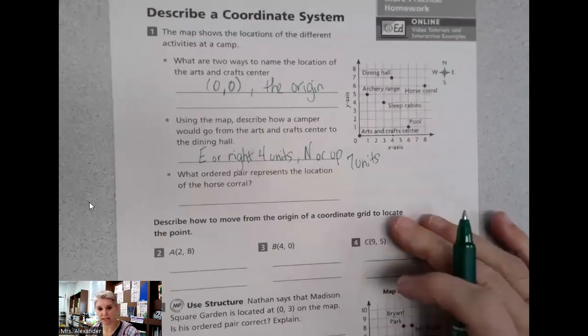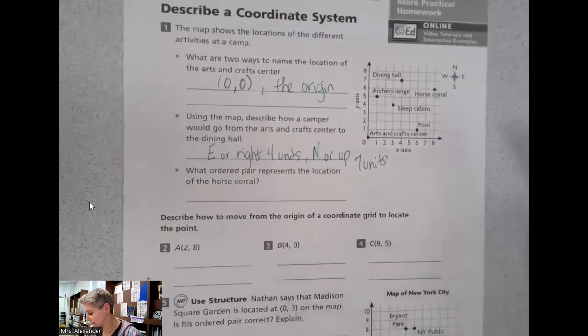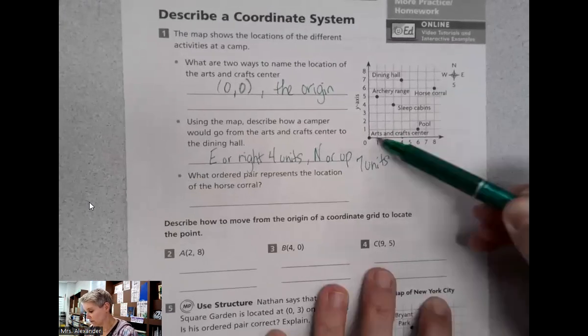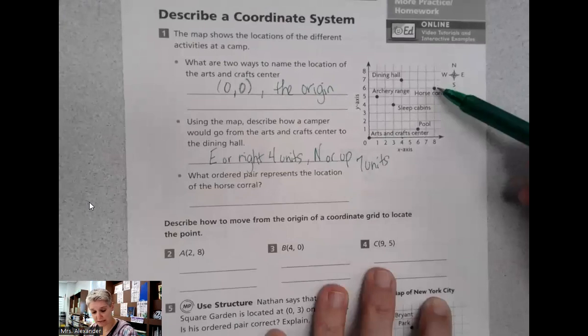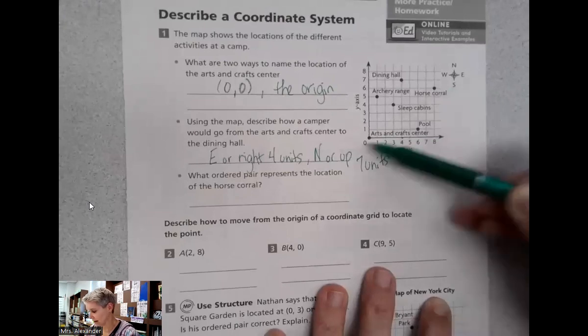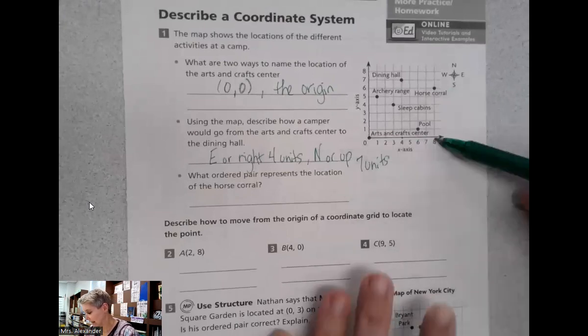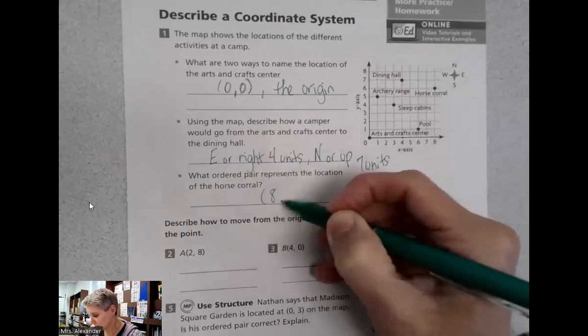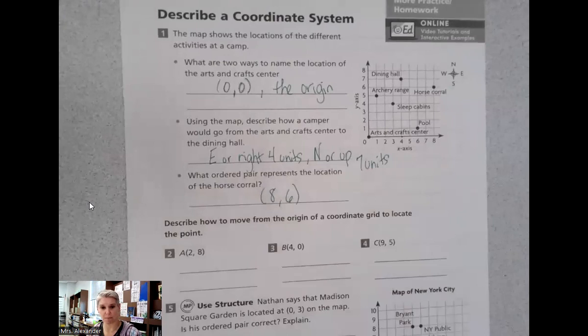What ordered pair represents the location of the horse corral? So we find the horse corral. Remember, we go over then up in order to state that coordinate pair. Walk to the mountain, climb the mountain, over and up. So we're going to go over to eight, up to six. So we write our ordered pair in those parentheses with a comma between.